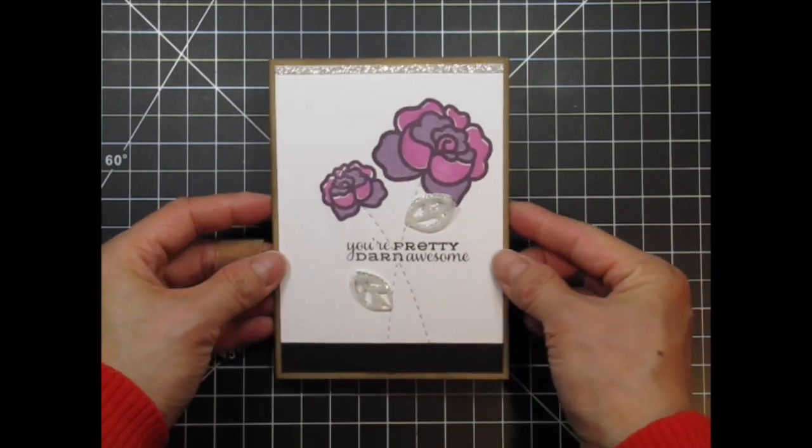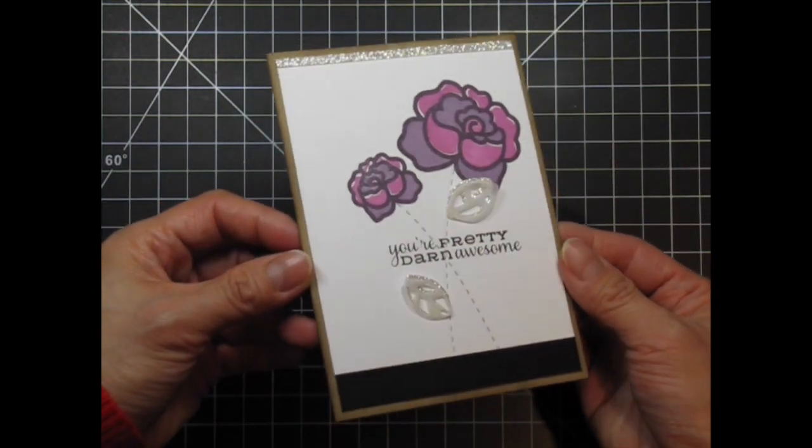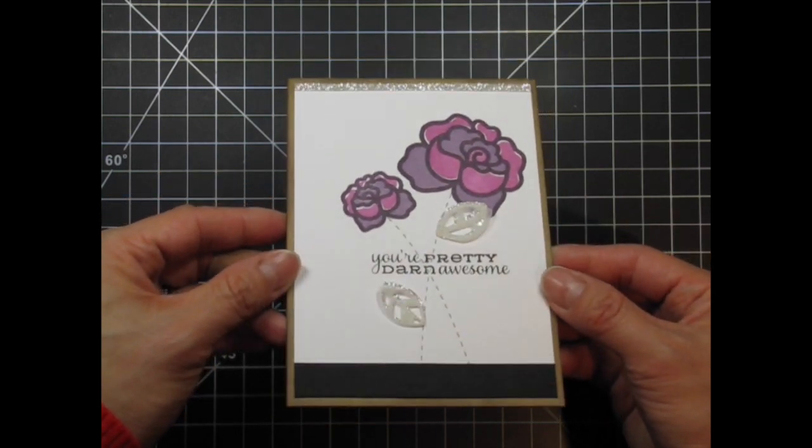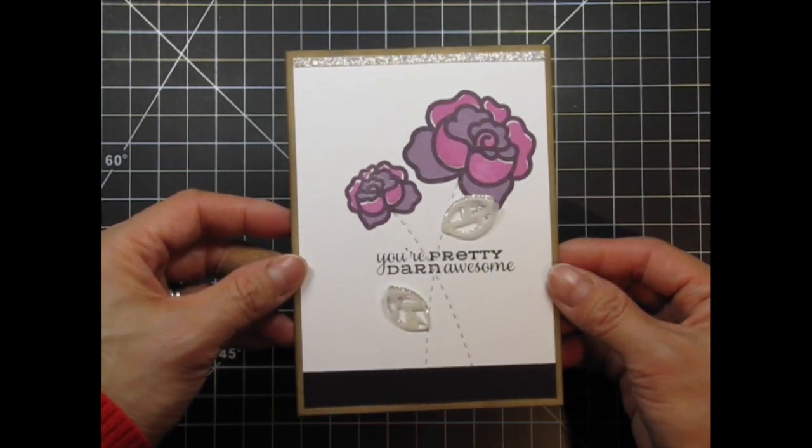Now my card is done. The Lovely Thoughts stamp set and rose dies will be available for purchase at midnight tonight at the Paper Smooches store and participating retailers on December 1st or shortly thereafter.